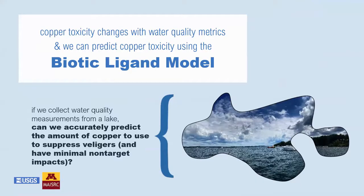For the second lake, we know that copper toxicity changes with water quality metrics, and we can predict it using the Biotic Ligand Model — the model used by the U.S. EPA to determine copper toxicity levels. If we collect water quality measurements from a lake, we want to know if we can accurately predict the amount of copper needed to suppress veligers in that lake, resulting in minimal non-target impacts.